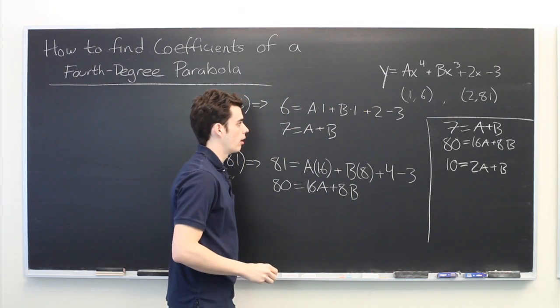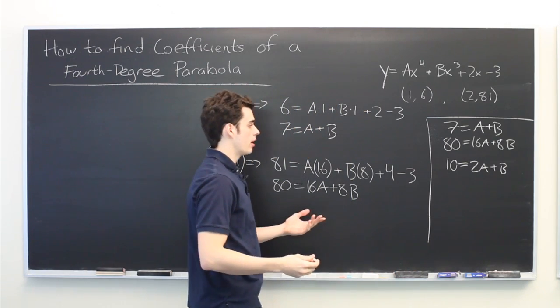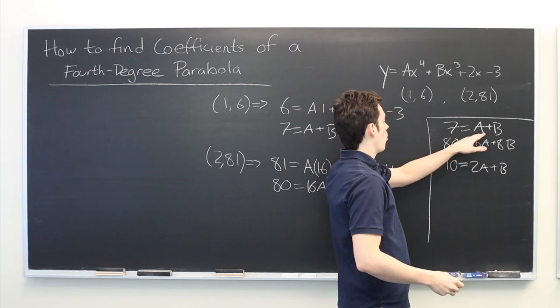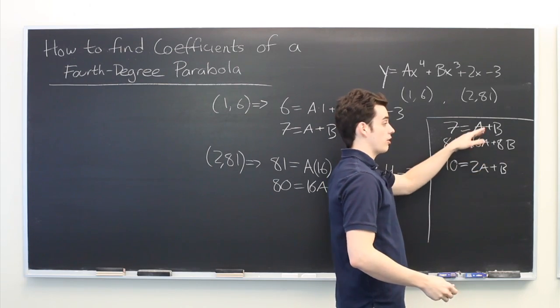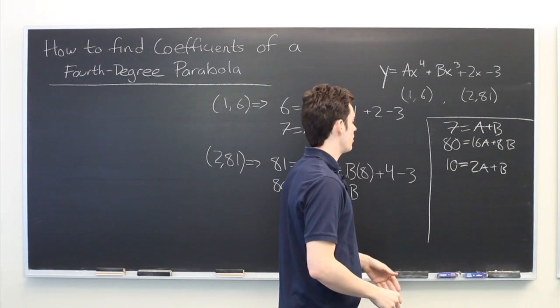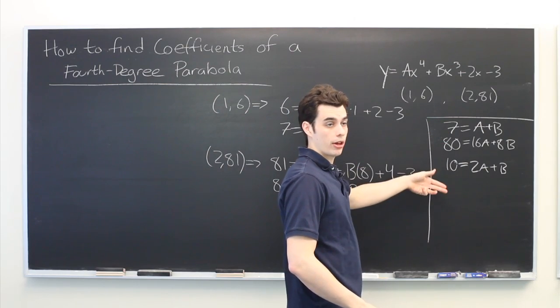Awesome. So now what we want to do is to isolate one of these two coefficients, either a or b. And we can do that by subtracting or adding one equation to or from the other.